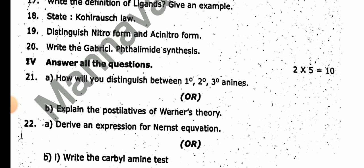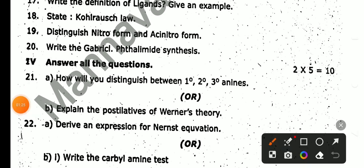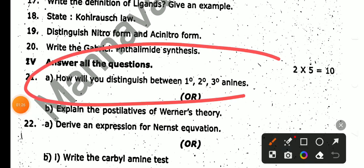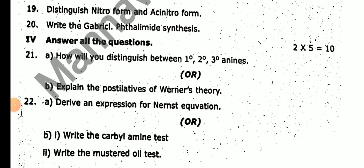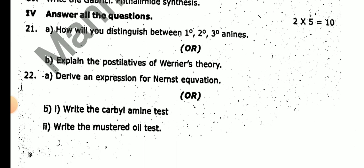Write Capriol synthesis. At the 5-mark section: How will you distinguish between amides? Explain Werner's theory.